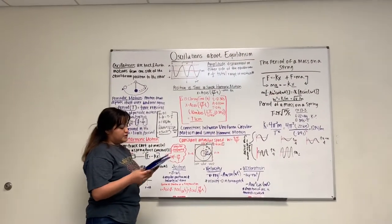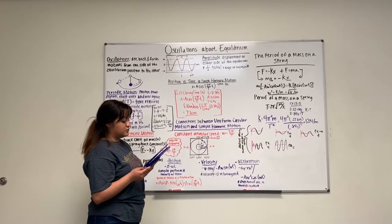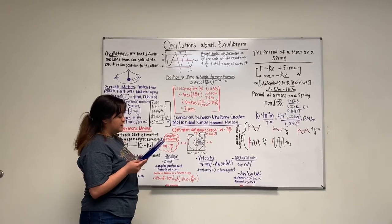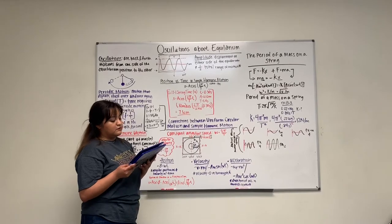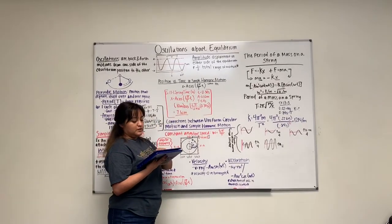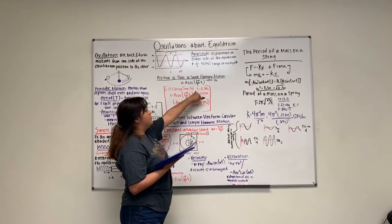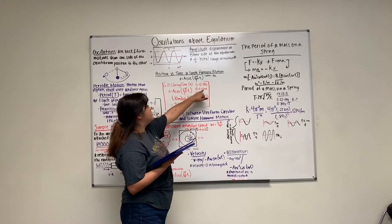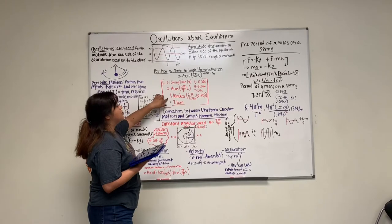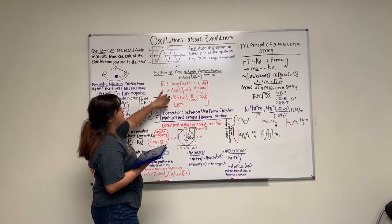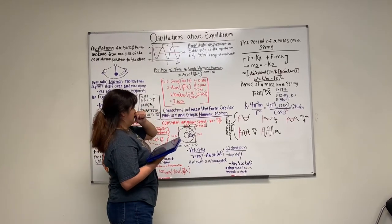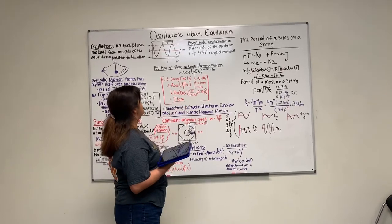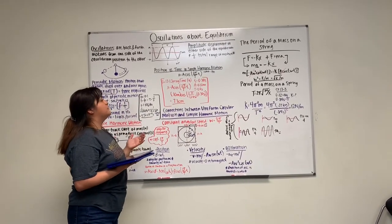I also added another problem. It states: an air track cart attached to a spring completes one oscillation every 2.4 seconds. At t equals zero, the cart is released from rest at a distance of 0.10 meters from its equilibrium position. What is the position of the cart at 0.30 seconds? So the lowercase t is 0.30 seconds, A is 0.10 meters, and the big T is 2.4 seconds. We input the information: A equals 0.10 meters times cosine of (2π over 2.4) times 0.30 seconds, and the answer should be 7.1 centimeters. That's how we use the equation for position versus time in simple harmonic motion.